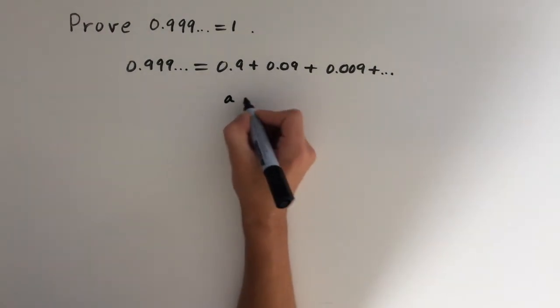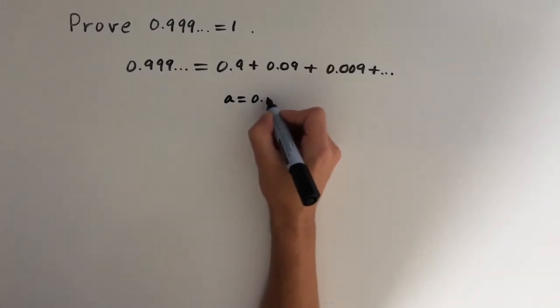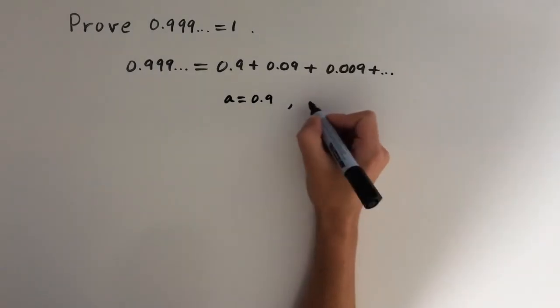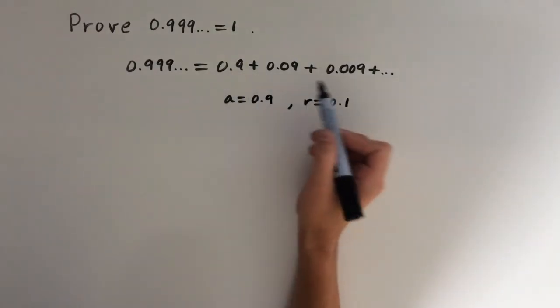So I'm just going to write out here that a, this represents the first term, so the first term is equal to 0.9 and that the ratio between terms is 0.1 because we're dividing by 10 every time.